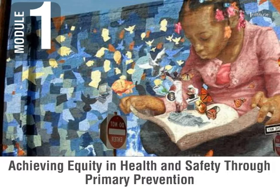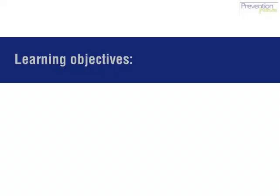Welcome to the Health Equity and Prevention Primer. Module 1, Achieving Equity in Health and Safety Through Primary Prevention, sets the stage for this online series. Primary prevention is a key strategy for eliminating inequities in health and safety. This module provides an overview of primary prevention and previews materials that will be covered later in the series.